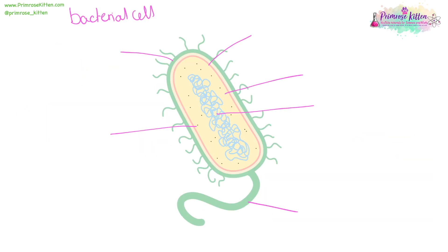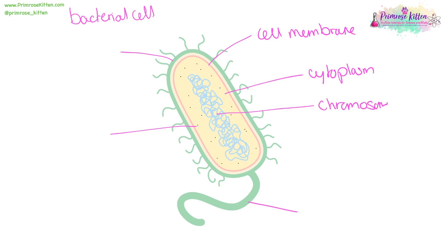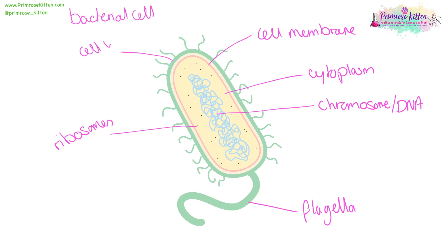Here we have our bacterial cell, which has its cell membrane controlling what goes in and out. The cytoplasm, where most of the reactions take place. The chromosome — the DNA is not in a nucleus. The flagella, which is used for locomotion. Ribosomes for protein synthesis. And on the outside, you have the cell wall.